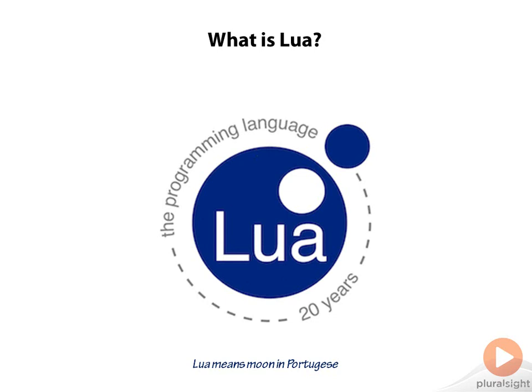Lua was specifically designed to work with C, so it has a C API, which is one of the ways that Lua is able to be embedded in many other programs. In those contexts, Lua provides a very simple, flexible way to allow for dynamic scripting in an otherwise strongly typed and static environment in many cases.